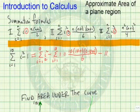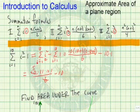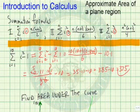So if we try to make this nicer to work with here, we have 10 times 11, 21, over 6, minus 10. We can divide the numerator and denominator by 2. We can divide by 3. So we have 5 times 7 is 35. 35 times 11, minus 10. 35 times 11 is 385. Minus 10 gives us 375.